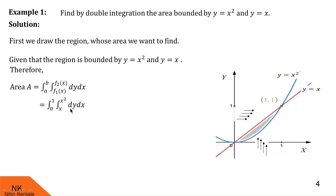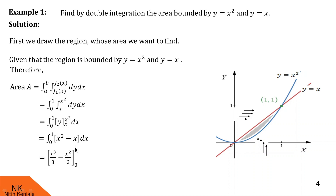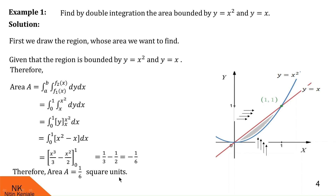Since we are integrating the inside integral with respect to y, the integration of 1 is y, evaluated over the limits x² to x. After substituting these limits we get the integral of (x - x²) dx over the limit 0 to 1. Integration of x is x²/2 and integration of x² is x³/3. Substituting the upper limit gives 1/3 − 1/2. Substituting the lower limit gives 0. So 1/3 − 1/2 = −1/6. We take the absolute value, so the area of this region is 1/6 square units.